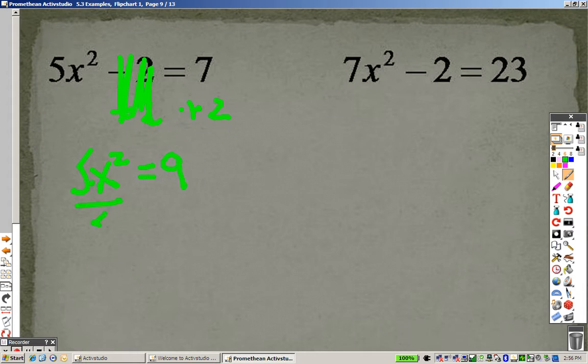5 times x squared, which means I need to divide by 5 on both sides. So I end up getting x² equals 9 over 5. Because it's x², I square root both sides. So I end up getting the square root of 9 over 5, which I can simplify to the square root of 9 over the square root of 5, which gives me 3 over root 5.